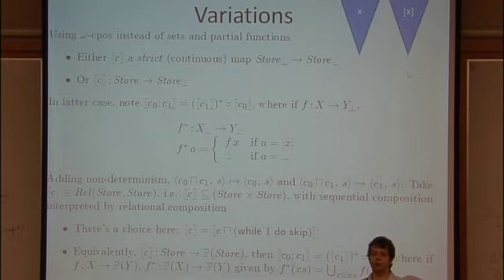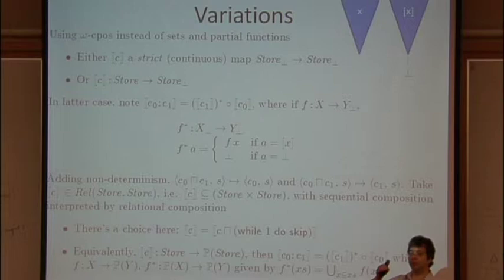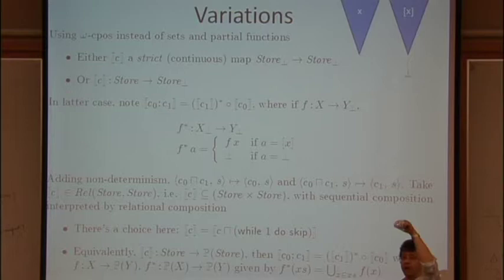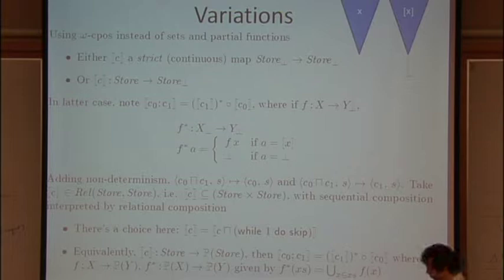So omega CPOs are partial orders which have least upper bounds of all omega chains, which are just what we're going to want to interpret recursive definitions. So if you have a natural number indexed increasing chain, then there's some element of the poset which is greater than all the elements of the chain and less than anything else which is greater than all the elements of the chain. And the continuous functions are things that preserve the order and least upper bounds.